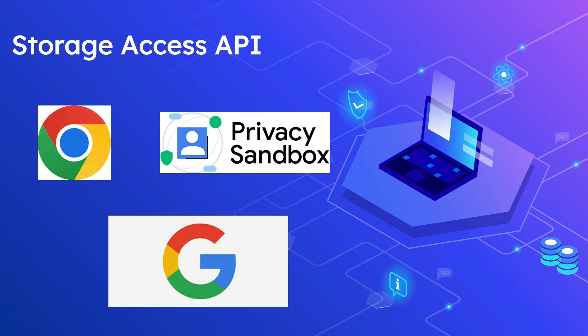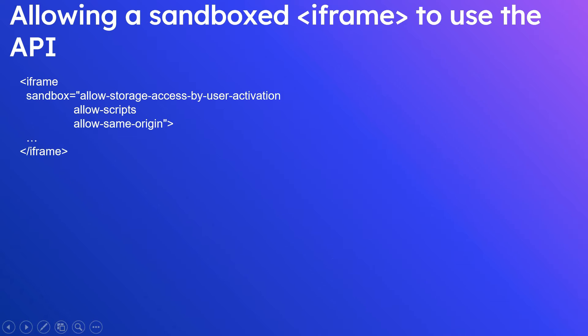This API is very useful when embedded content like an iframe from a different website wants to communicate and share things like cookies in a way that is safe and controlled. It helps prevent cross-site tracking and data leakage by giving websites more granular control over which third-party sites can access their storage. Websites can use the Storage Access API to request access to storage on behalf of embedded content and receive permissions from the user.